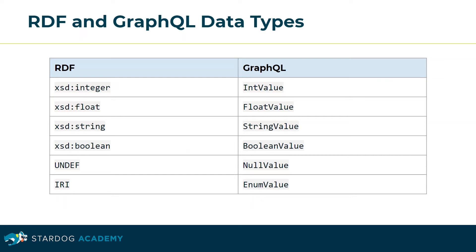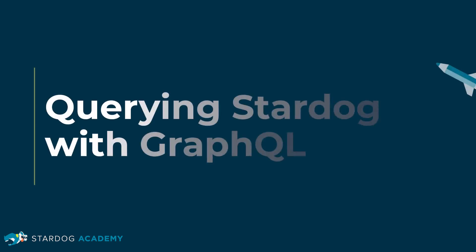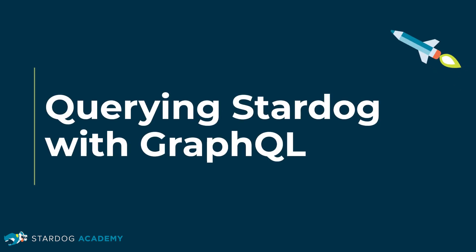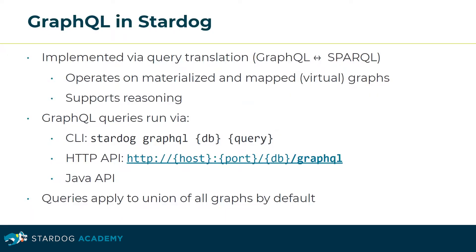This concludes the section comparing GraphQL, SPARQL, and RDF. In Stardog, GraphQL is implemented via query translation, meaning that GraphQL is translated into and out of SPARQL. It operates on both materialized and mapped or virtual graphs, and it supports reasoning. GraphQL queries can be run via the CLI, HTTP API, or the Java API, and queries will apply to a union of all graphs by default.